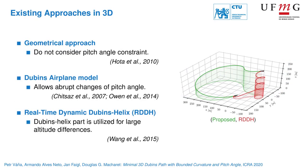In the literature, we can identify three different approaches to tackle the problem in 3D. First, the geometrical approach connects two turn segments in 3D with a straight line. However, the pitch angle of the straight segment is not constrained and it leads to an unfeasible solution.